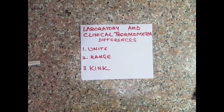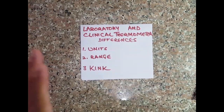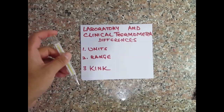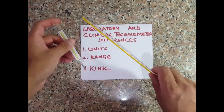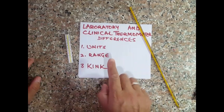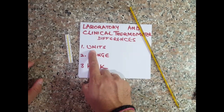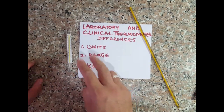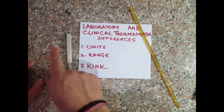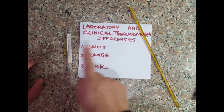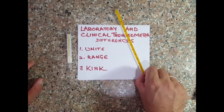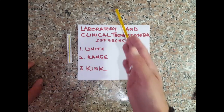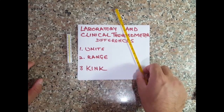In our previous video, we learned two differences between a laboratory thermometer and a clinical thermometer. The first difference is that both of them have different units. A clinical thermometer can show temperature in degrees Celsius as well as in Fahrenheit, but most laboratory thermometers will usually use only one unit, which in our case was only degrees Celsius.